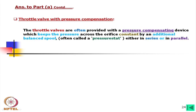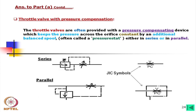A throttle valve with pressure compensation: throttle valves are often provided with a pressure compensation device which keeps the pressure drop across the orifice constant by an additional balance spool, often called a pressure-stat, either in series or in parallel. In the series connection, in the same line there is the throttle valve as well as a pressure control valve. In the parallel connection, the pressure control valve is in parallel. Essentially, at the upstream side there is also a system pressure relief valve.